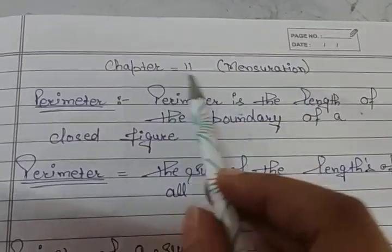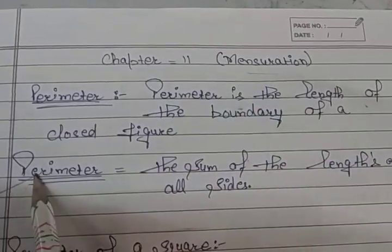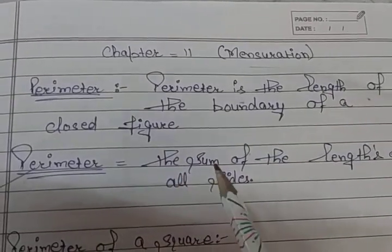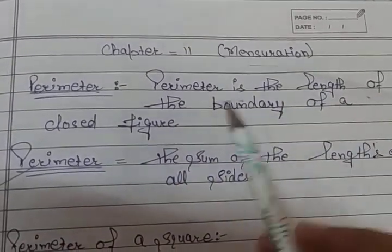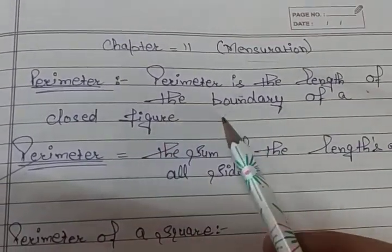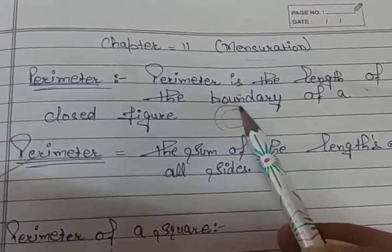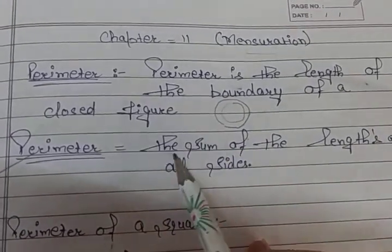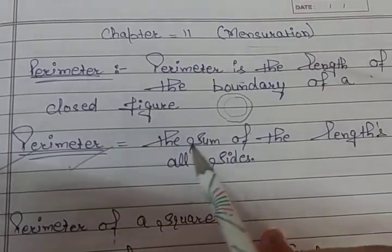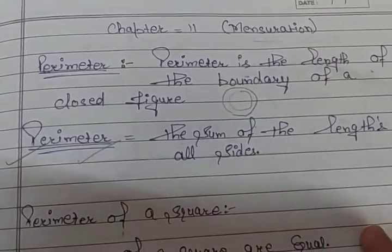The next chapter is mensuration. Here, the parameter — what is parameter? Parameter is the length of the boundary of any closed figure. Koi bhi closed figure ki agar boundary hai, that is your parameter. The general formula of parameter is the sum of the length of all sides.